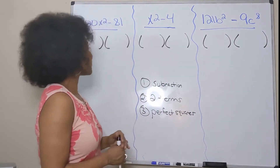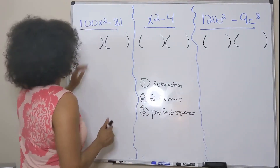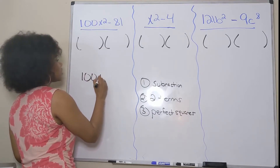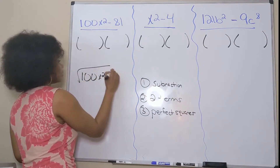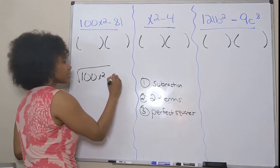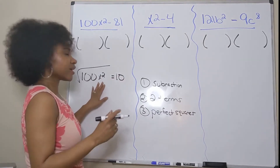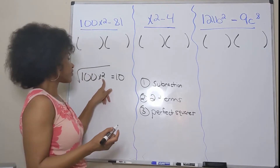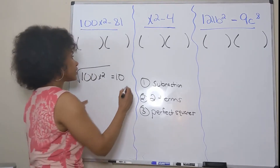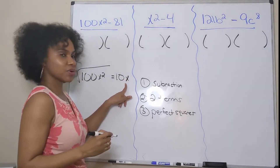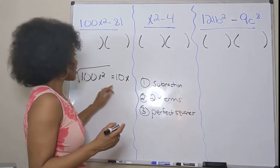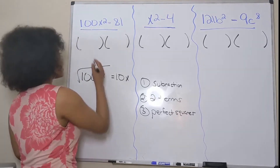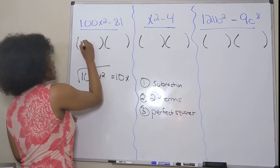The square root of 100x² — the square root of 100 is 10, and the square root of x² is just x to the first, since half of the exponent 2 is 1. So the square root of 100x² is just 10x. I'm going to write 10x at the beginning of each binomial.